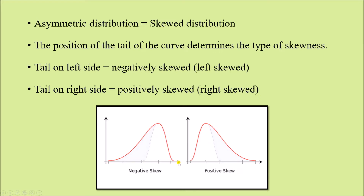The x-axis in the curve denotes the variable value, so as we go towards the right side the value of the variable increases. That is why when the distribution is left-skewed — tail is on the left side — it is known as negatively skewed, because the value of the variable there is less. When the tail is on the right side, the value is more, so this is known as positively skewed. Remember: left-side tail is left-skewed or negatively skewed; right-side tail is right-skewed or positively skewed.